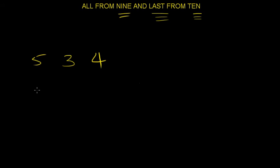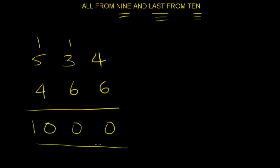So, all from 9. So, 9 and 5 gives you 4, 6, 6. 466. Now, let's see. Does that add up to 1,000? Zero. And carry 1. Zero. Carry 1. Voila. You get 1,000.